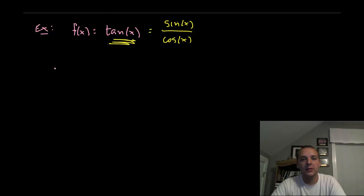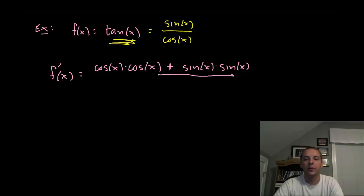Let's just take it slow. The derivative of tangent would be low, d high, derivative of sine would be cosine, less high, and then d low would be negative sine X. So I have a sine X and I'll take that extra negative and turn this minus into a positive, O low squared, so cosine squared X.